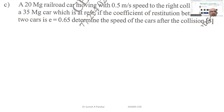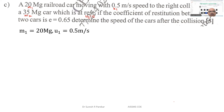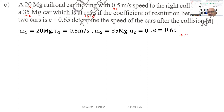Problem 1: Car m1 collides with car m2 which is at rest. Given: m1 = 20 kg, u1 = 0.5 m/s; m2 = 35 kg, u2 = 0; e = 0.65. We need to find the speeds of both cars after impact using our two equations with two unknowns.